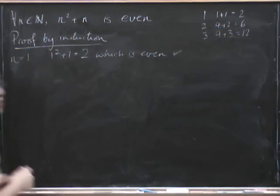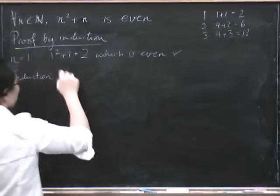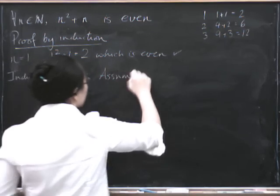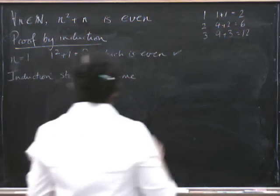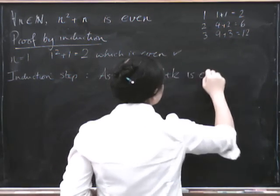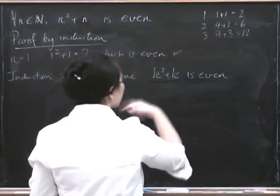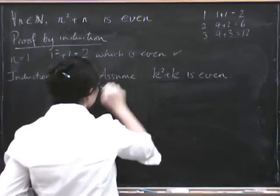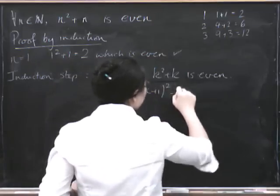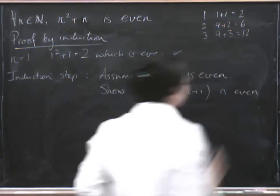So now let's do the induction step. We assume that it's true for n equals k, so that k squared plus k is even. And what we want to do is show that if this is true, then the next one up is true. So we want to show that k plus 1 squared plus k plus 1 is even.